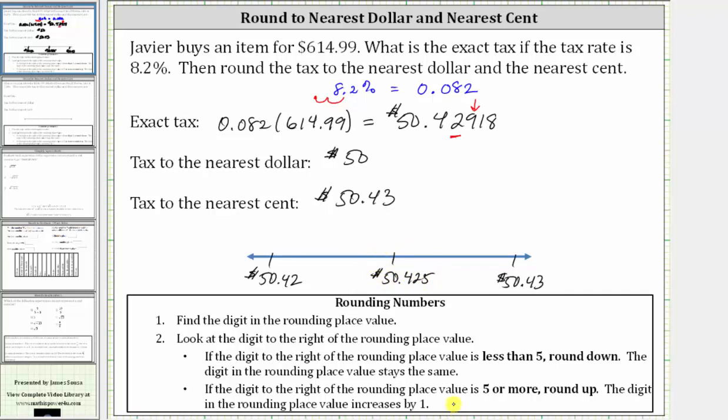We can quickly see that the exact tax of $50.42918 is very close to $50.43, maybe approximately here, which is the reason why the exact tax to the nearest cent rounds up to $50.43. I hope you found this helpful.